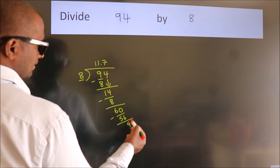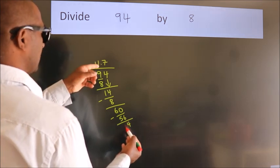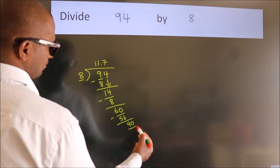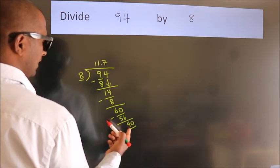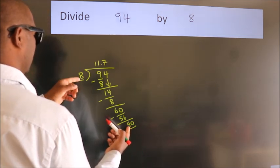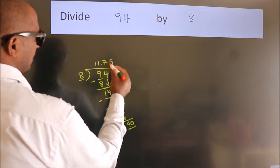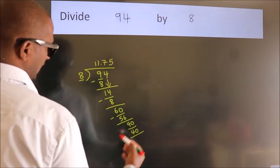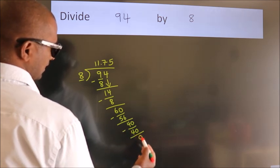After this, we already have the decimal. So directly take 0. So, 40. When do we get 40? In 8 table, 8 fives, 40. Now we subtract, we get 0.